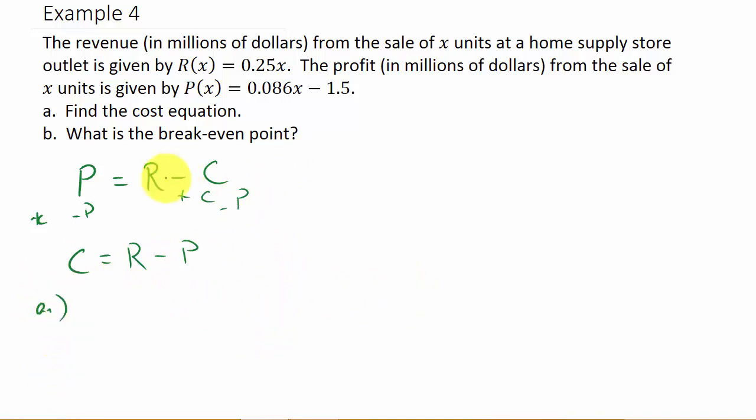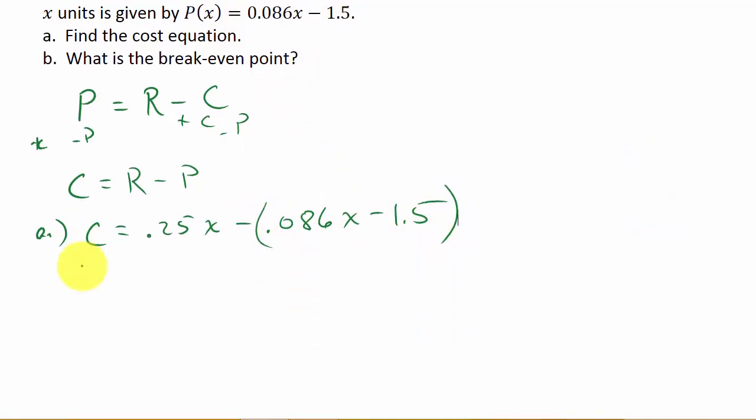So for part a, my cost is my revenue, which is .25x, minus my profit, which is .086x minus 1.5. Make sure that you don't leave out the parentheses, because it's minus this whole thing. It's minus the entire profit function, so you have to make sure you have that in parentheses.